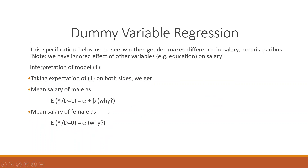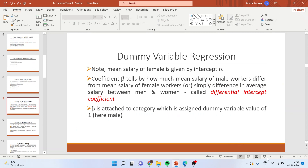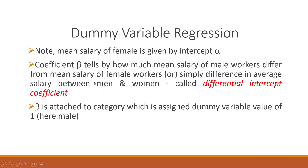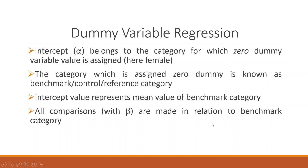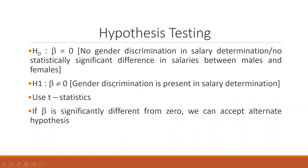The mean salary of females is given by the intercept alpha. The coefficient beta tells how much the mean salary of male workers differs from that of female workers — it is a differential intercept coefficient. Beta is attached to the category assigned the dummy value of 1, while alpha belongs to the category assigned 0, the reference category. The hypothesis test is H0: beta = 0, meaning no gender discrimination in salary determination. The alternative is beta ≠ 0, meaning gender discrimination is present. If beta is statistically significant, we accept the alternative hypothesis.